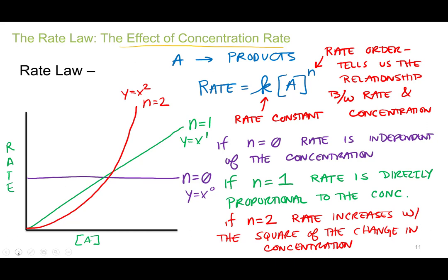A little more common is n equals one, where the rate is directly proportional to concentration. If you double the concentration you double the rate; if you triple the concentration you triple the rate; if you quadruple you quadruple; and so on. That's a straight-line relationship. You determine this in lab by plotting rate versus concentration — a straight line means directly proportional, so n equals one.